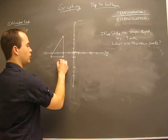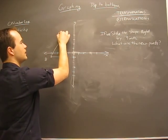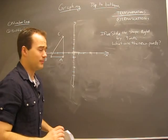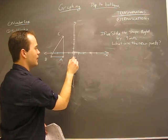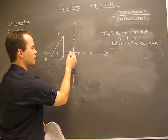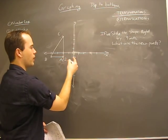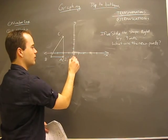So let's call these points A, B, and C. You can call them any letter, it doesn't matter. A is an x value of minus two and a y value of minus one.